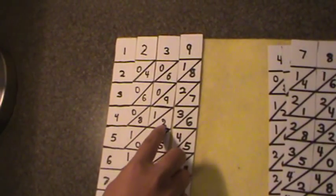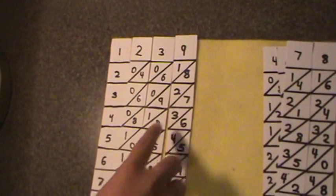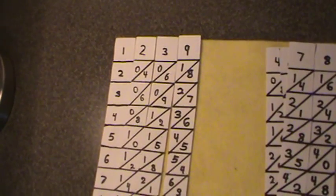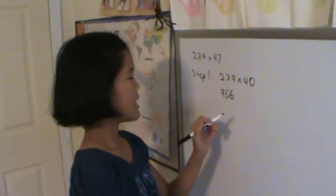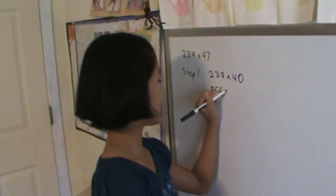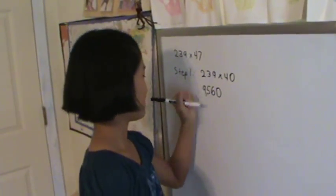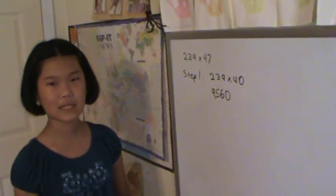Then you go over, 2 and 3 you add together to make 5, and then the last one is 6. But that isn't complete because you haven't multiplied it by 40, you multiplied it by 4. So to multiply it by 40, you just add a 0 to the end. So your answer is 9,560.